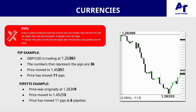All you have to remember is that the third and fourth digits for any pair — not including the yen — are the pips, and the fifth digit is the pipette. For the yen, pips are the first two digits and the pipette is the third digit.